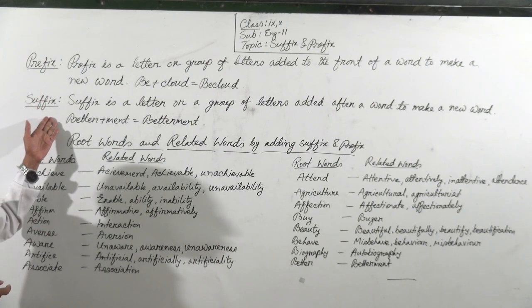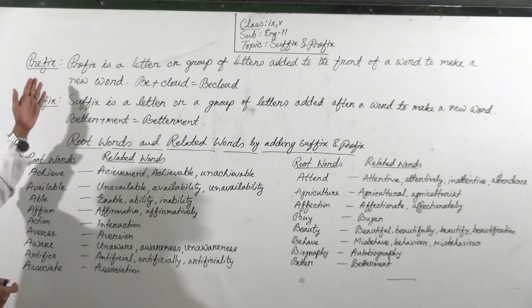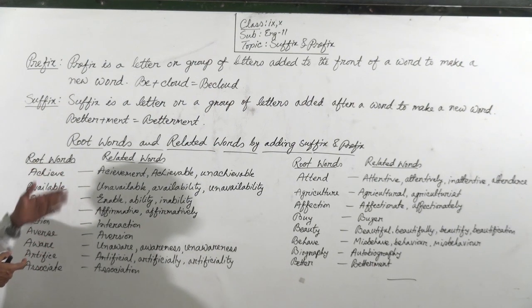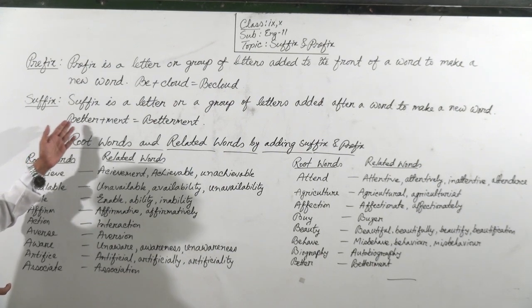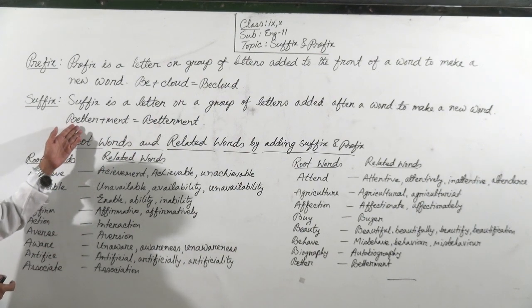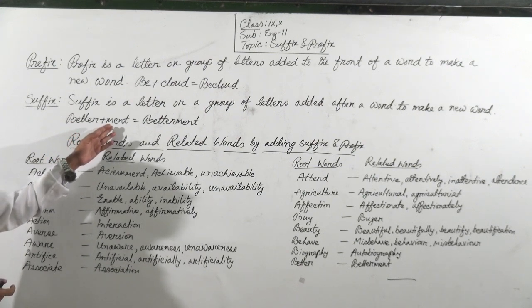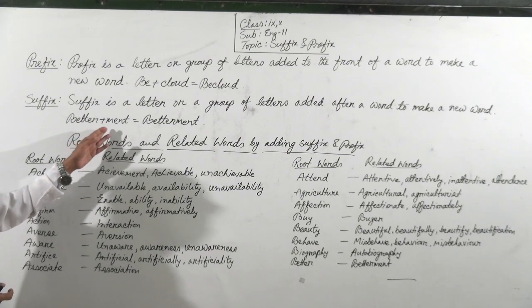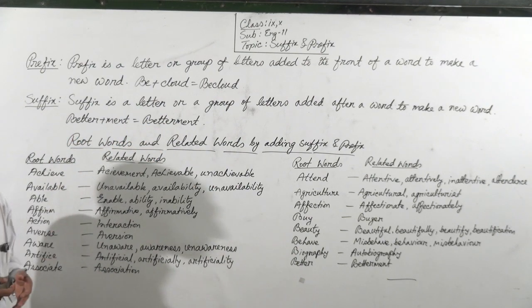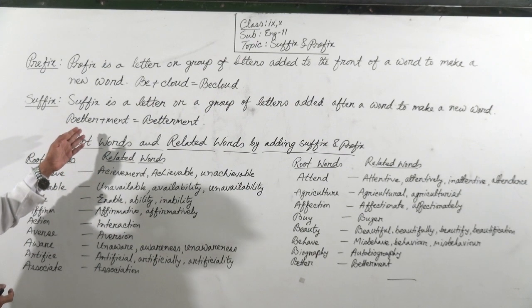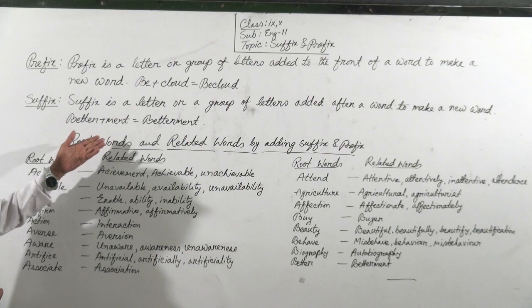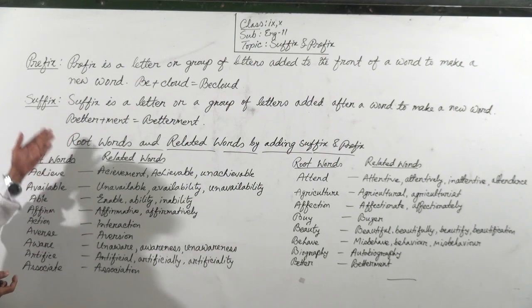What is the difference between prefix and suffix? Prefix is added to the front of a word and suffix is added after a word. Follow the example and it will be clear to you. Better plus 'ment' equals 'betterment.' Here the root word is 'better' and the suffix is 'ment.' So 'ment' is added after the root word, and the new word we get is 'betterment.' In this way, when a letter or a group of letters is added after a root word to make a new word, it is called suffix.